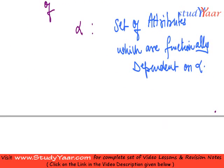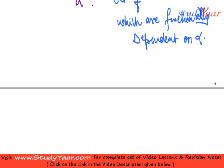So this is my closure of an attribute set. Let's see what are the uses of a closure of an attribute set. Uses.